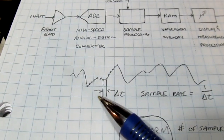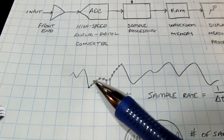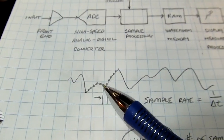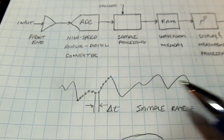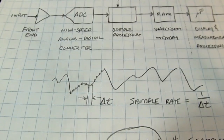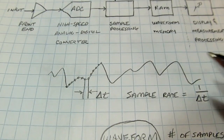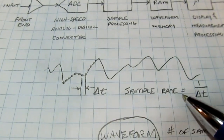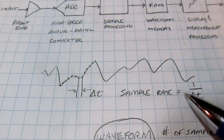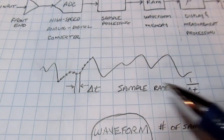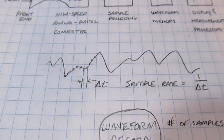The sample rate is nothing more than how quickly we're taking voltage snapshots of the input waveform — that is simply one over the time difference between the samples.